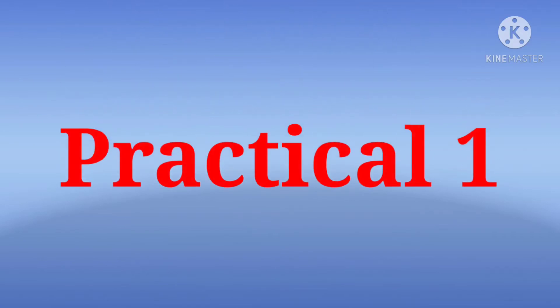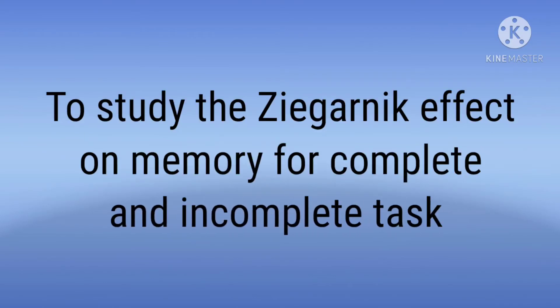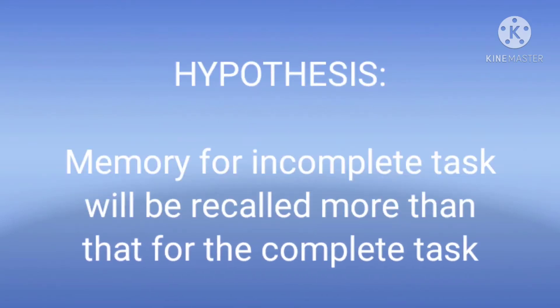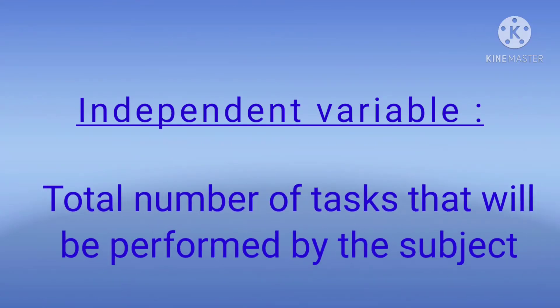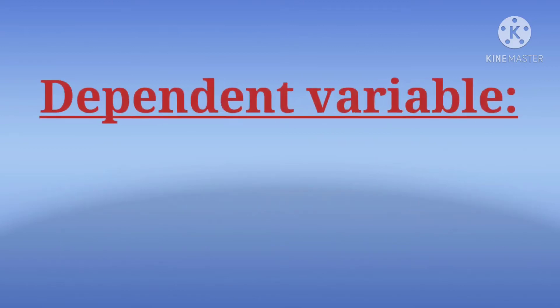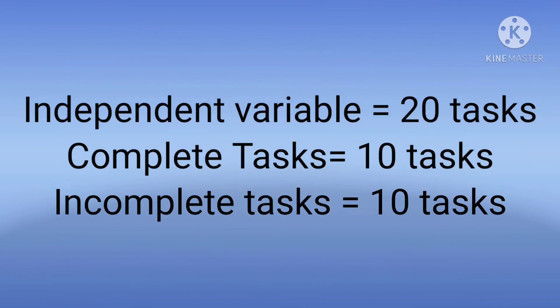Using this theory, you will be conducting an experiment to study the Zeigarnik effect on memory for complete and incomplete tasks. The hypothesis in this experiment is that memory for incomplete tasks will be recalled more than that of complete tasks. The independent variable is the total number of tasks performed by the subject. The dependent variable is the number of recalls of the name of the task. The total number of tasks is 20, of which 10 are complete tasks and 10 are incomplete tasks.